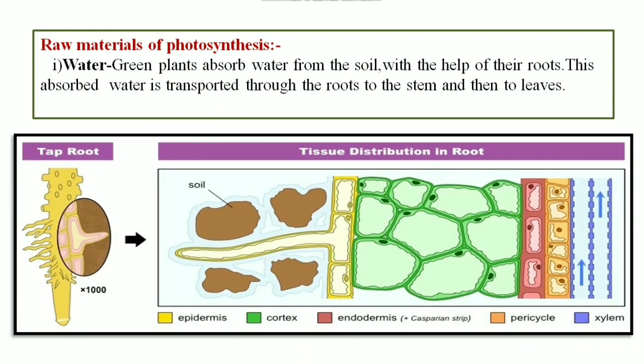Let us study from this diagram. This is the root system of the plant and this is the root hair and this into 1000 that indicates this figure is 1000 times magnified. This is the root hair and these are the soil particles and the water which is available in between the soil particles is only available to the root hairs for its conduction. So water enters the root hair and then passes through the different cells and finally reaches the xylem.